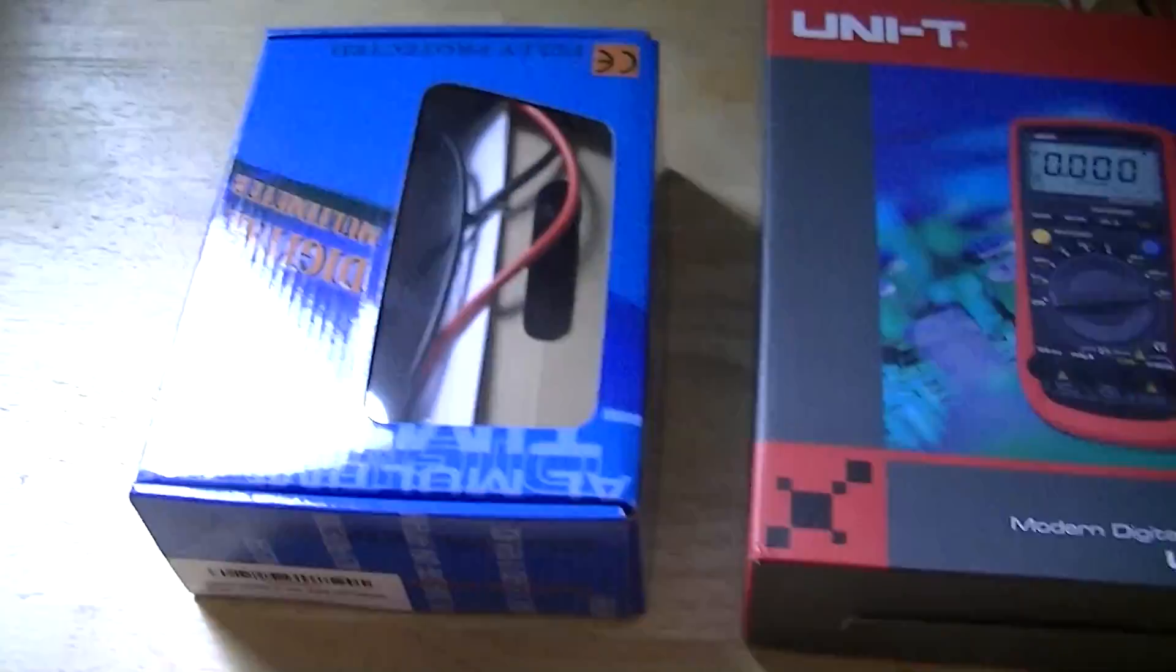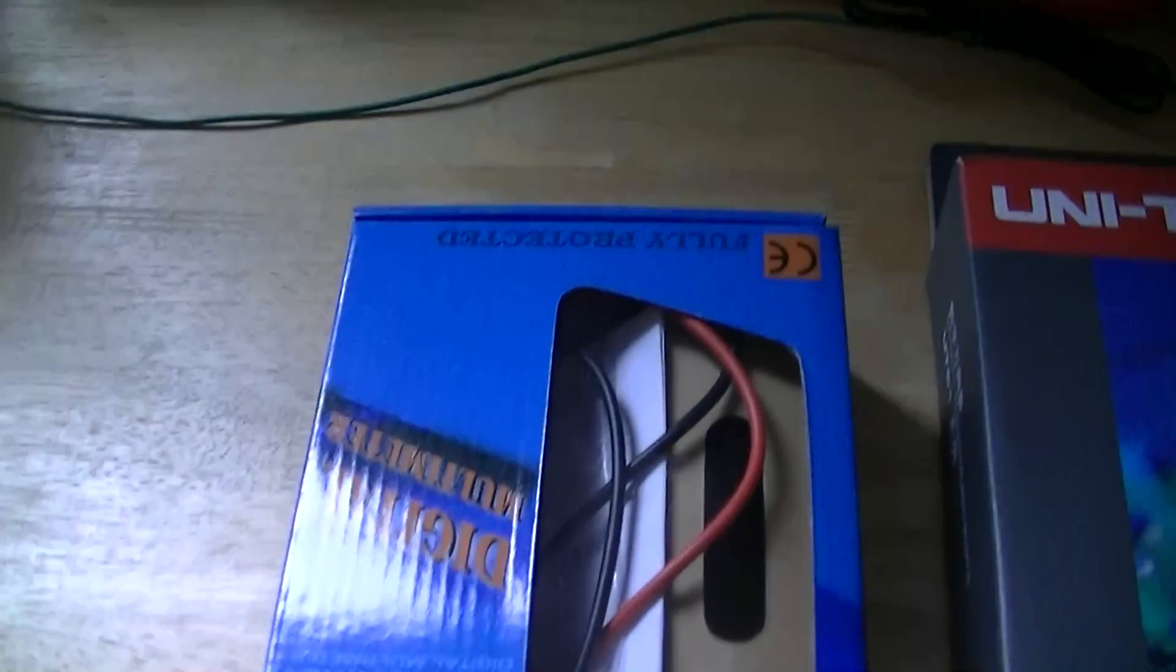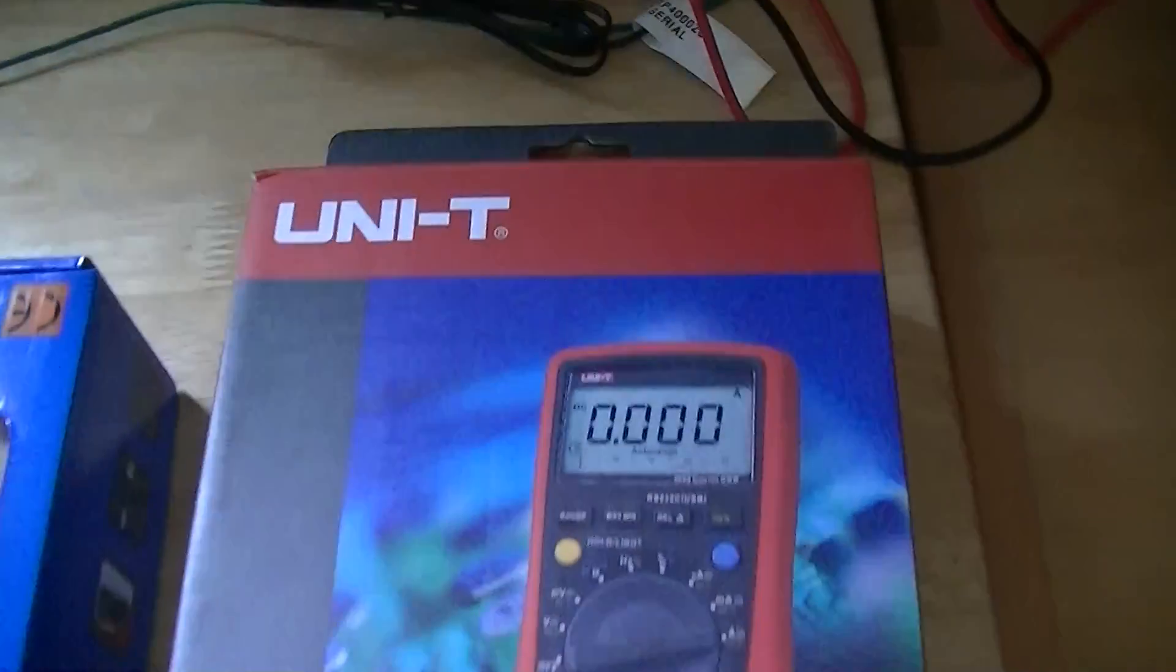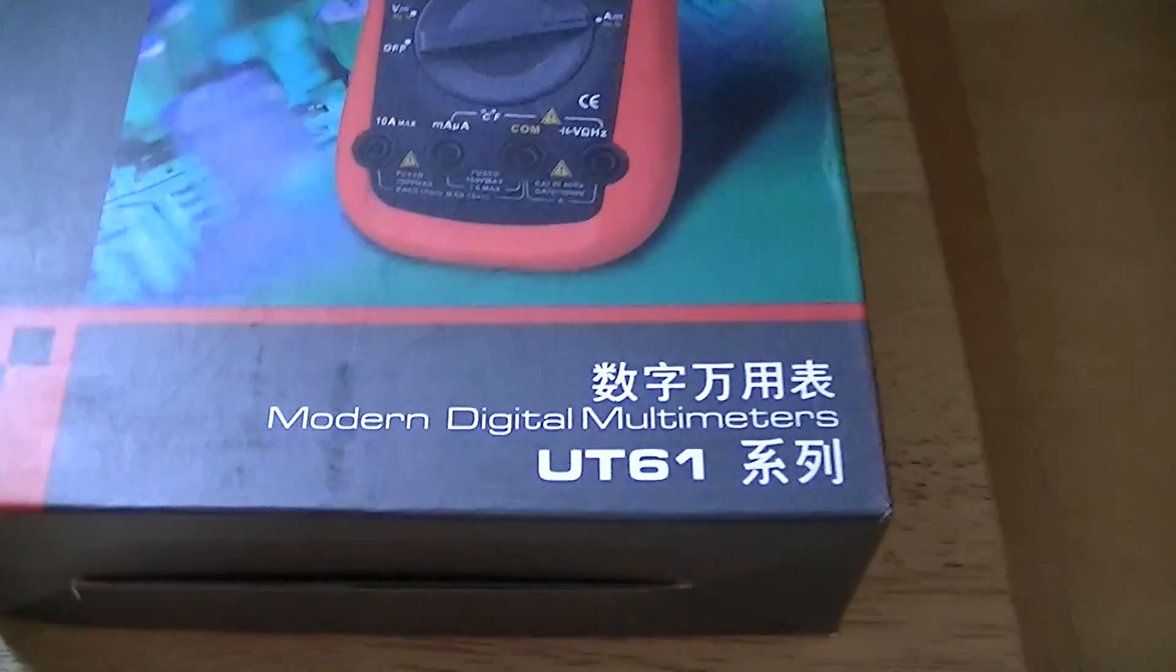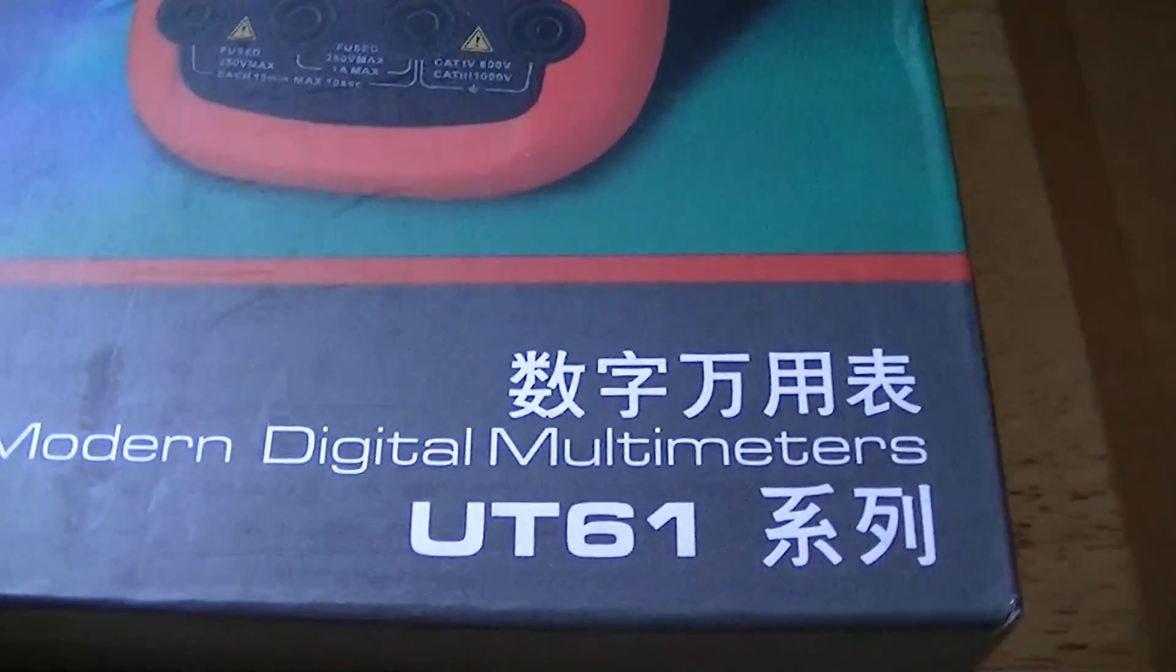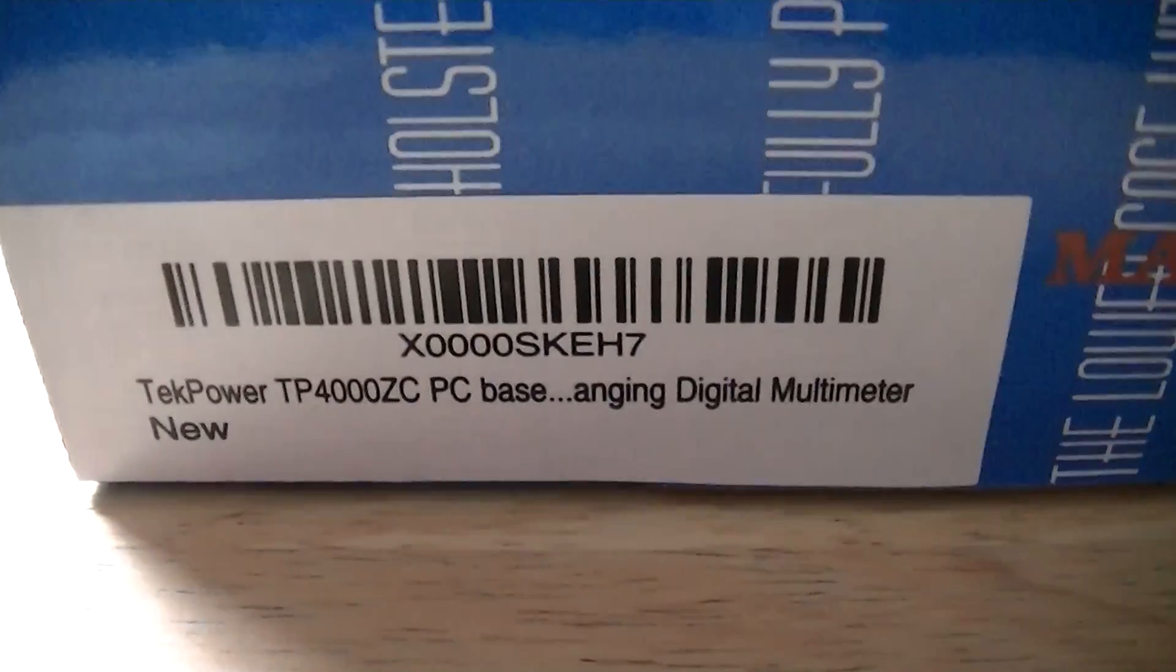This is how the meters arrive. They arrive in these boxes. This is what the Uni-T looks like. This was the Uni-T UT61D. And this was the box that our TechPower meter arrived in.